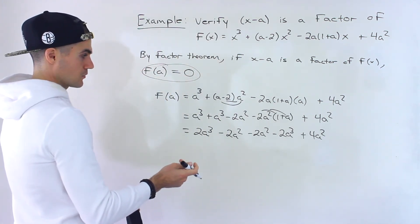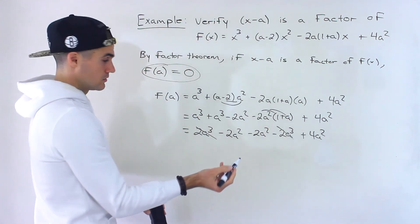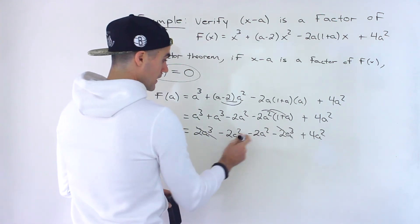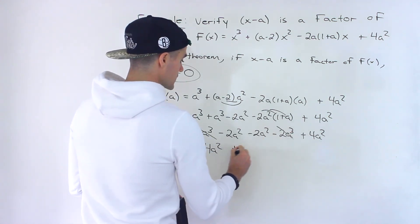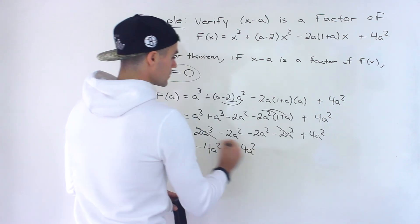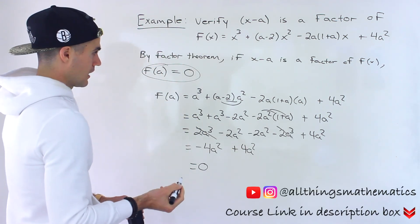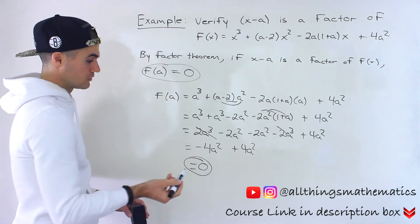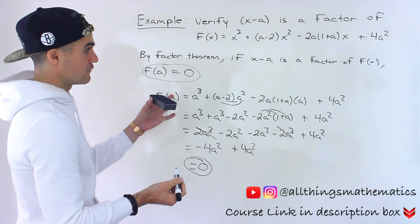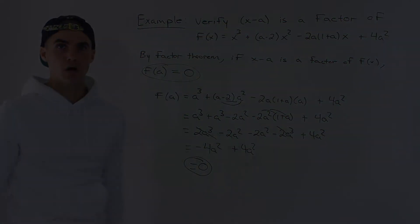And now let's see what happens when we simplify. Notice the two a cubes cancel out, and then minus two a squared, minus two a squared, those are like terms that would give us negative four a squared, then we have the plus four a squared, and then notice that those two net to zero. And so because f of a is equal to zero by the factor theorem, we verified that x minus a is a factor of that polynomial.